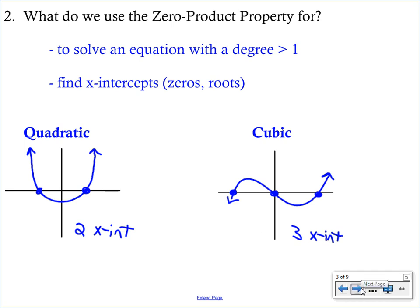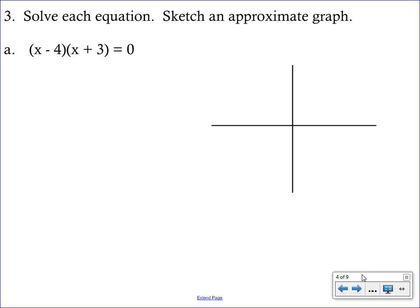Let's work some examples. For each example we're going to solve the equation and then use those solutions to make a graph. You'll notice that we have the product of two binomials — this looks like a FOIL problem, although we are not going to be FOILing. Instead we're going to use the ZPP and identify these two binomials as A and B. The zero product property says if A times B equals zero, then either A is zero or B is zero.